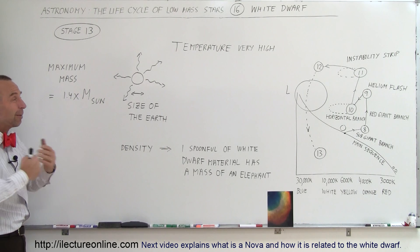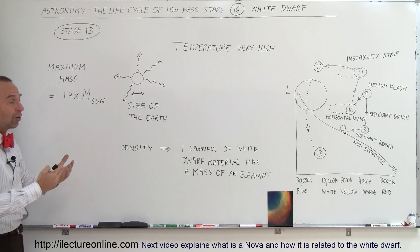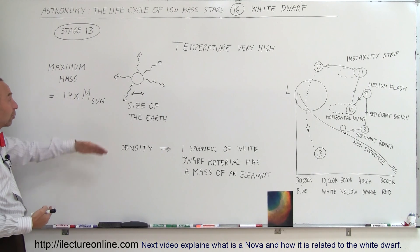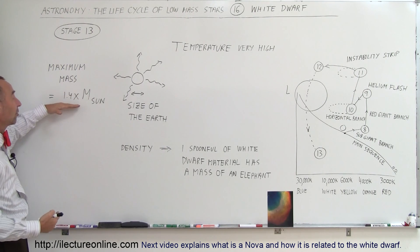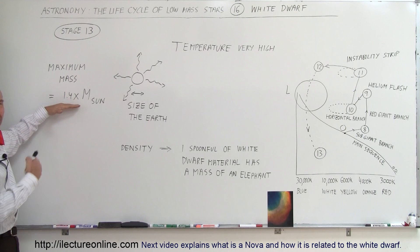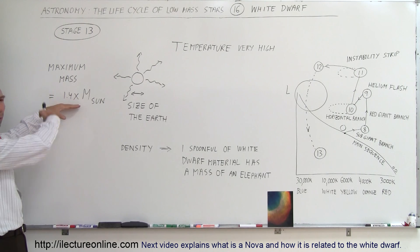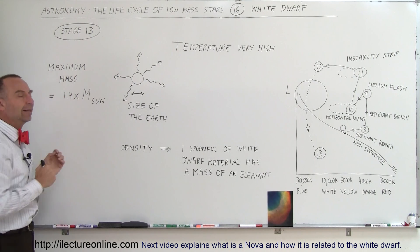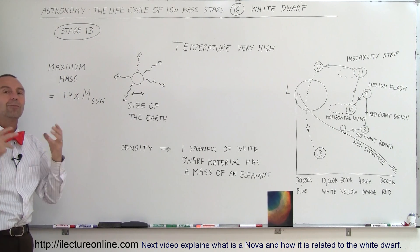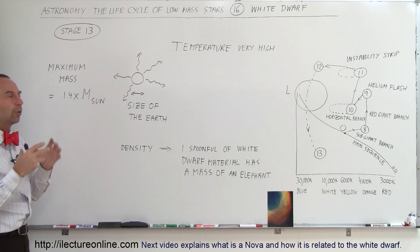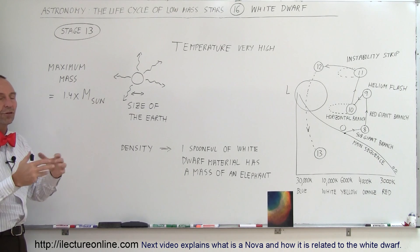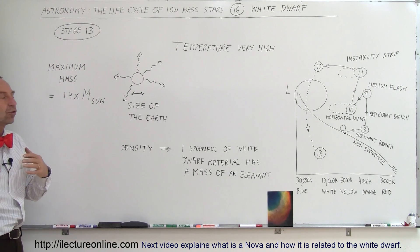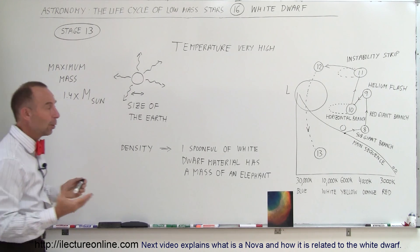White dwarfs, typically for most stars — especially like our sun, which starts with only 1 times the mass of the sun — could never have a white dwarf remnant bigger than that. Therefore, most white dwarfs will always remain as white dwarfs in the universe and slowly cool down over billions of years.